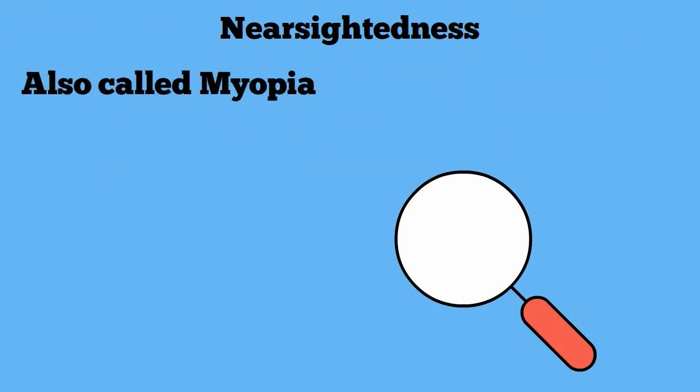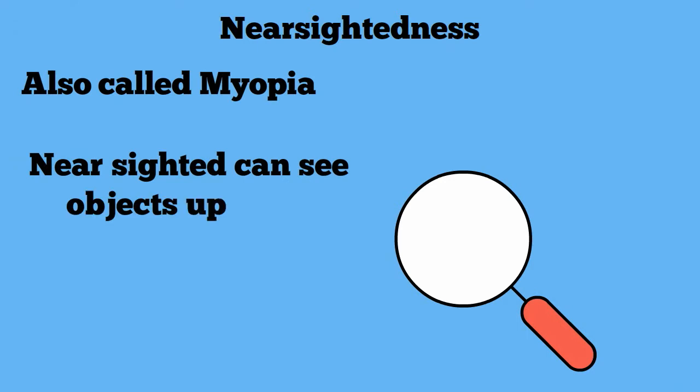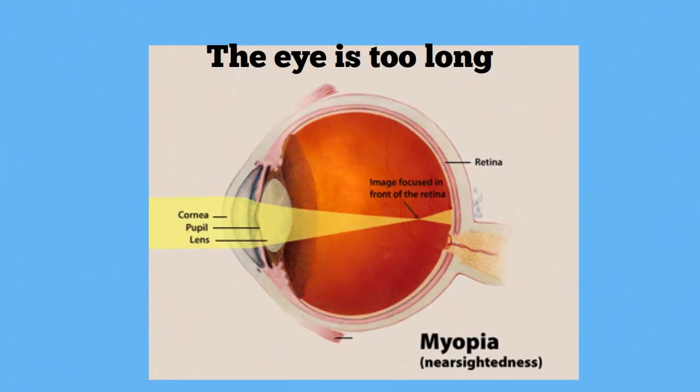is when people can see nearby objects clearly, however they have trouble seeing objects that are far away. Nearsightedness is caused by an eyeball that is too long.